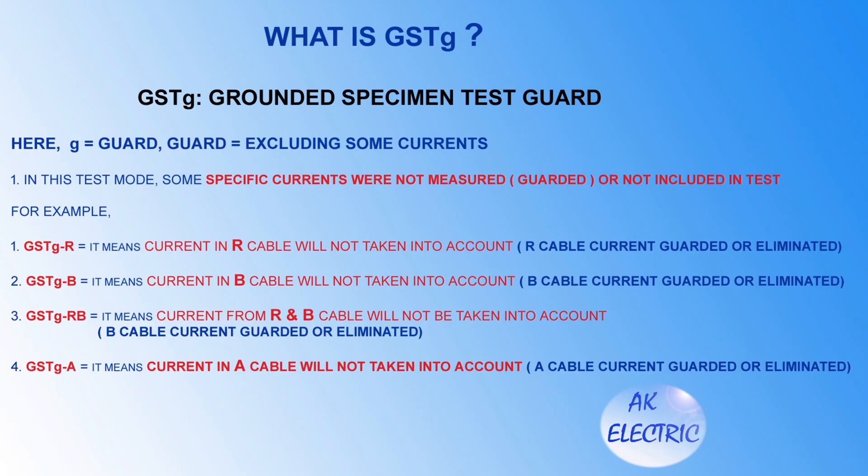What is GSDG? GSDG stands for Grounded Specimen Test GARD, where GARD means excluding or guarding some currents. In this test mode, some specific currents are not measured or not included. For example, GSDGR means the current in the red cable will not be taken into account — red cable current is guarded or eliminated.